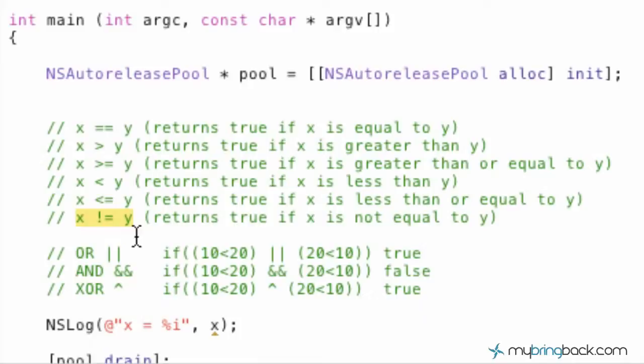the exclamation point equals line is not equal to. So, remember that moving forward, we'll do some more detailed stuff on that.